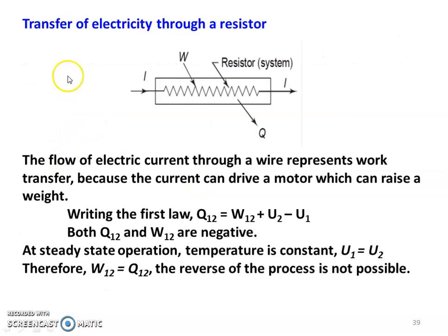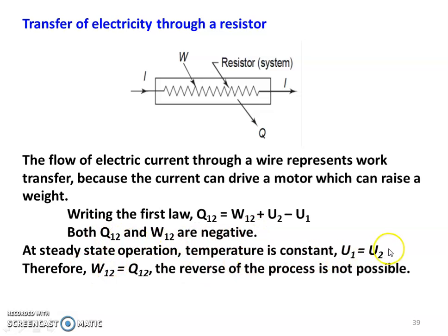Transfer of electricity through a resistor: an electric current flows through a resistor and may be used to drive a motor which can raise a weight. Flow of electric current through a wire represents work transfer because current can drive a motor which can raise a weight. Writing the first law: Q1-2 = W1-2 + (U2 - U1). Q1-2 is negative, W1-2 is also negative — it is the work input to the system. Both Q1-2 and W1-2 are negative, and U1 equals U2. The reverse of the process — where heat produces work through the resistor — is not possible. So the process is irreversible.